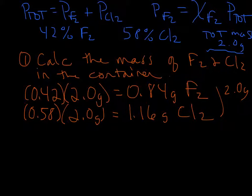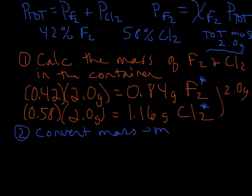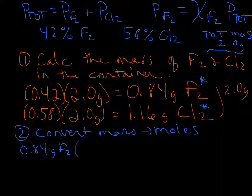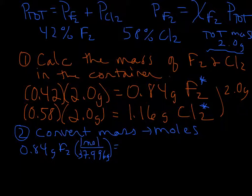Now let's convert each mass of gas to moles. We take 0.84 grams of fluorine gas. The molar mass of fluorine atoms from the periodic table is 18.998 g/mol, and since fluorine gas is diatomic, we multiply by 2, giving 37.996 grams per mole. Dividing, we end up with 0.0221 moles of fluorine gas.